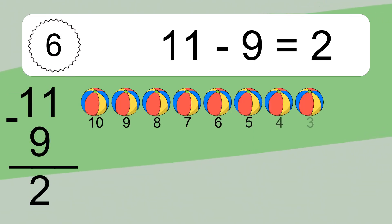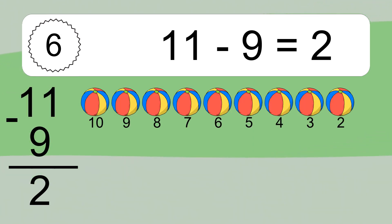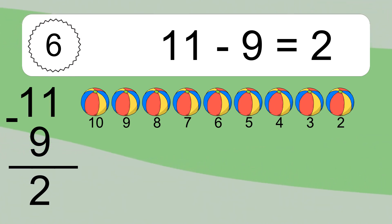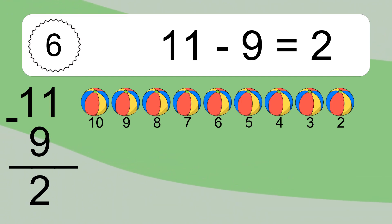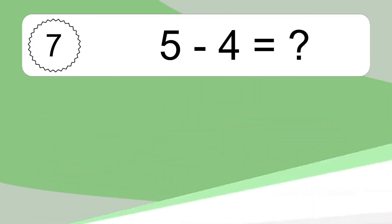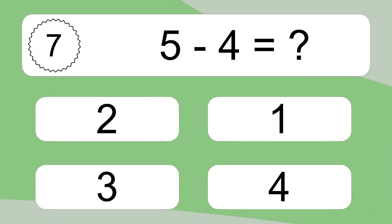11 minus 9 equals what? 11 minus 9 equals 2. Let's count it: 10, 9, 8, 7, 6, 5, 4, 3, 2. 5 minus 4 equals what?